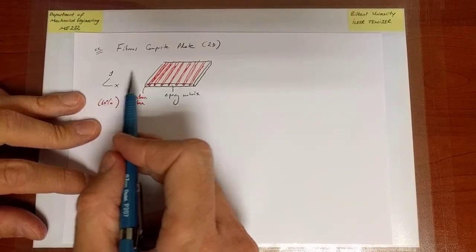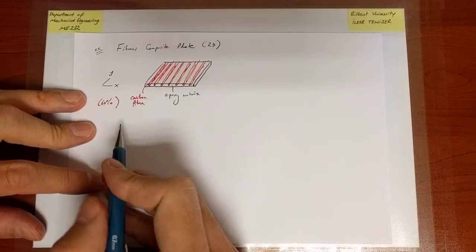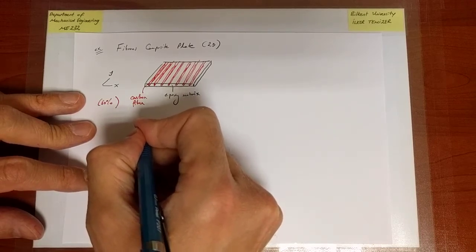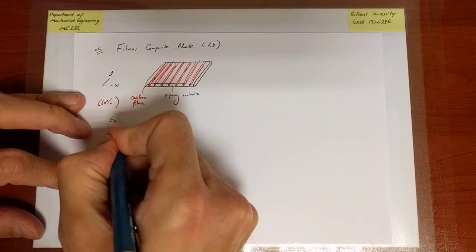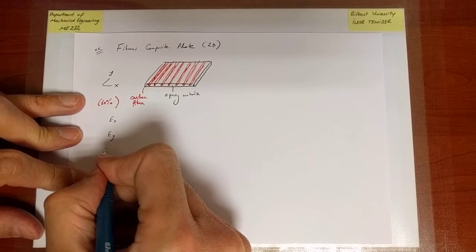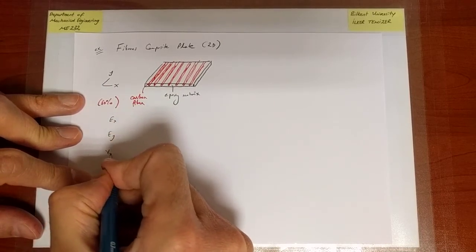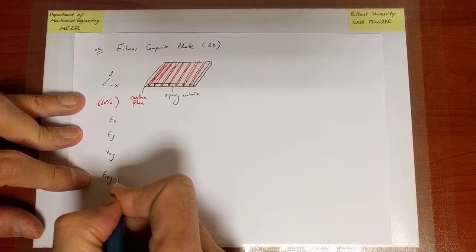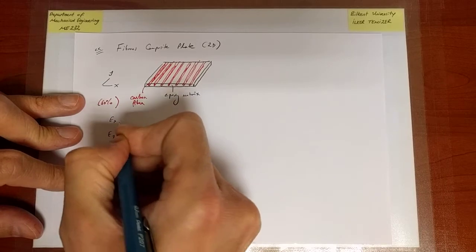I am only interested in the x, y plane, so there is going to be a Young's modulus in the x direction, a Young's modulus in the y direction, a Poisson ratio associated with the x, y direction, and a shear modulus associated with the x, y direction.